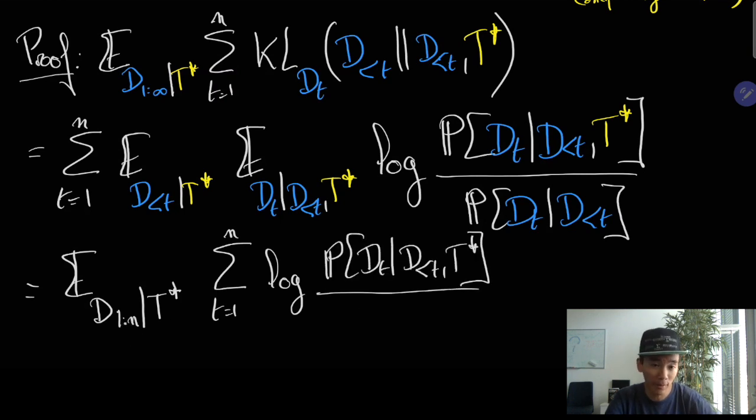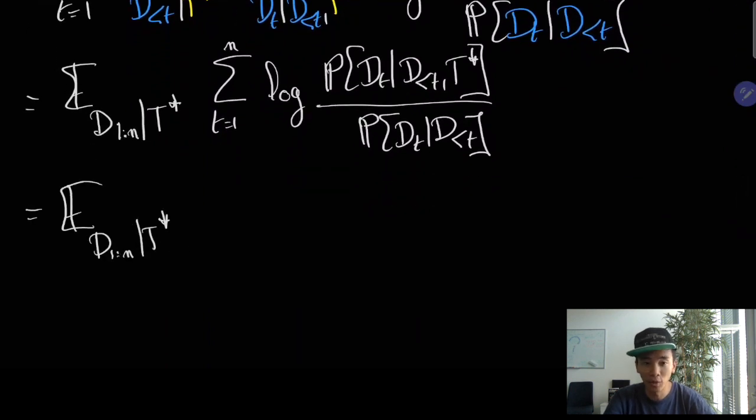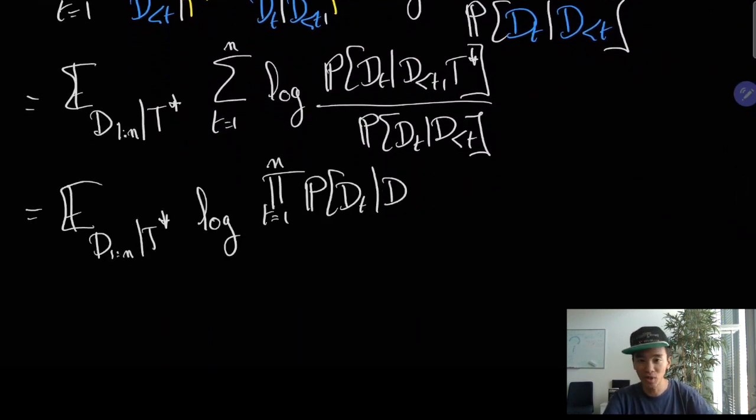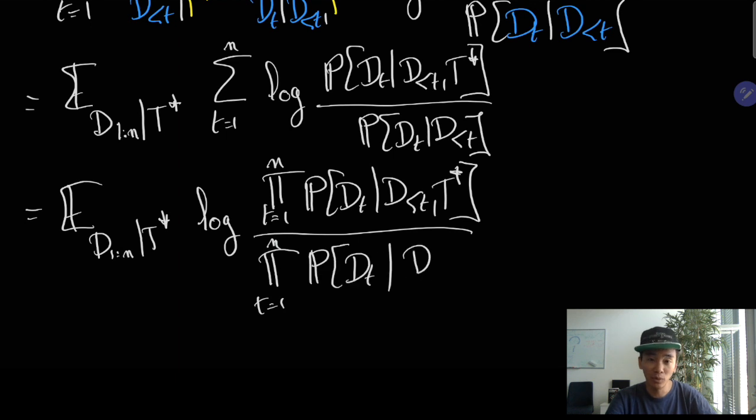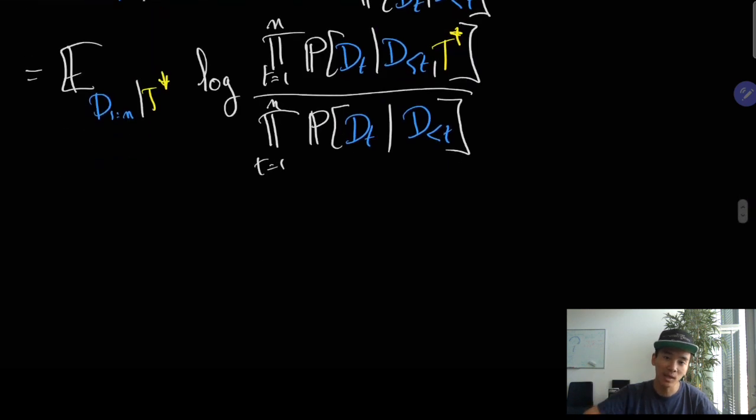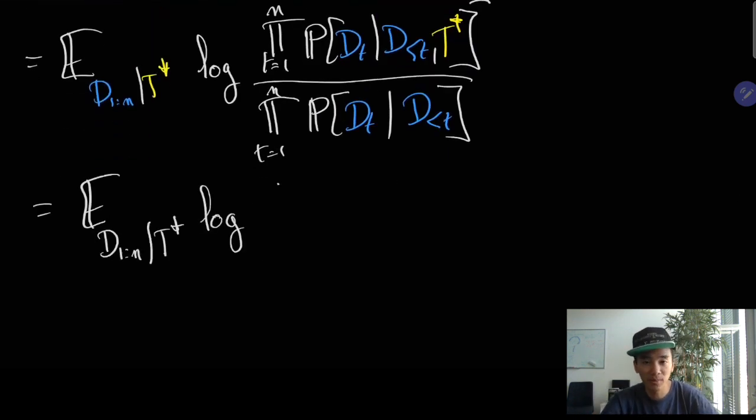Then we get an expectation over the sum of the logarithm of this ratio, and the sum of the logarithm is the logarithm of the product, and then we get a chain rule of the numerator and the denominator of the different sequences of data.